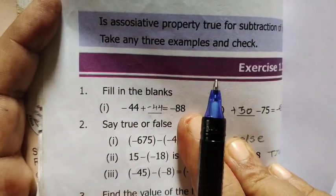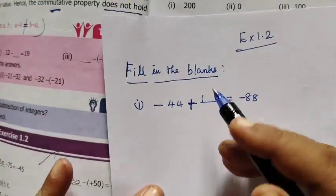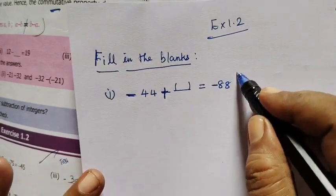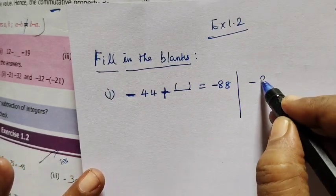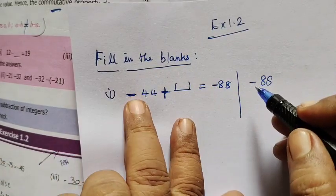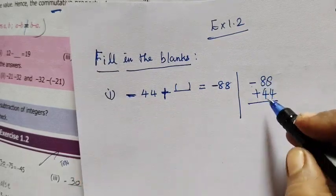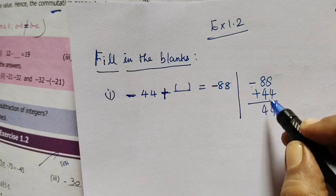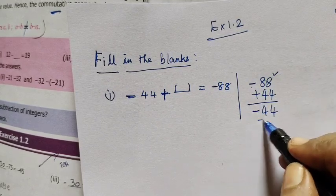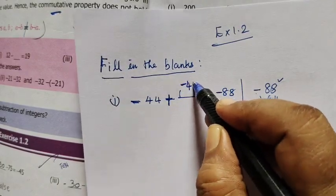Minus 44 equals minus 88. What do you fill in this box? If you say minus 44 and minus 88, add with a separate sign. The greater number is this one, and its sign is minus.